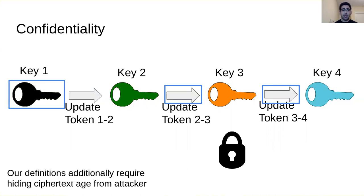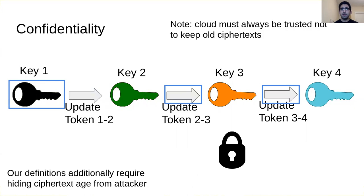Our definitions additionally require hiding the ciphertext age, so an attacker cannot tell whether a ciphertext under key 3 was initially encrypted under key 3 or was first encrypted under key 2 and then updated — those two ciphertexts should look the same. A caveat true of all updatable encryption schemes is that the cloud must always be trusted not to keep old ciphertexts; if someone obtains the old ciphertext and the old key, they could decrypt, so this trust assumption is unavoidable.